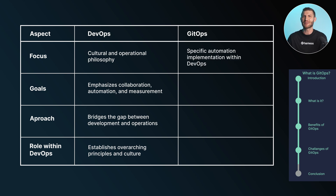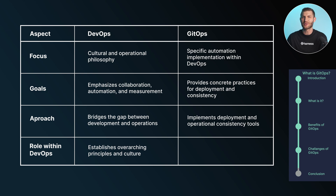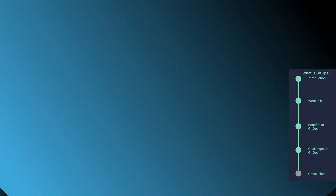GitOps is a specific automation implementation approach within the DevOps ecosystem. GitOps can be seen as a valuable practice within DevOps: while DevOps establishes the overarching principles and culture, GitOps provides concrete examples, tools, and some of the tooling to achieve these goals, particularly in deployment and operational consistency.